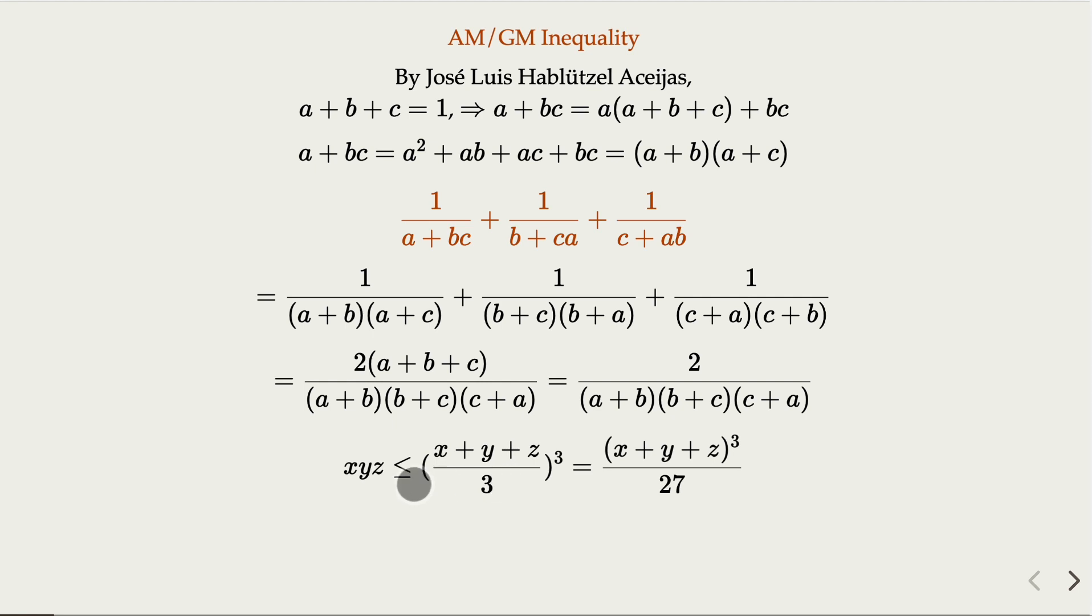If you have x, y, z, this is the result from the AM-GM inequality here for three variables. x, y, z are positive, of course.